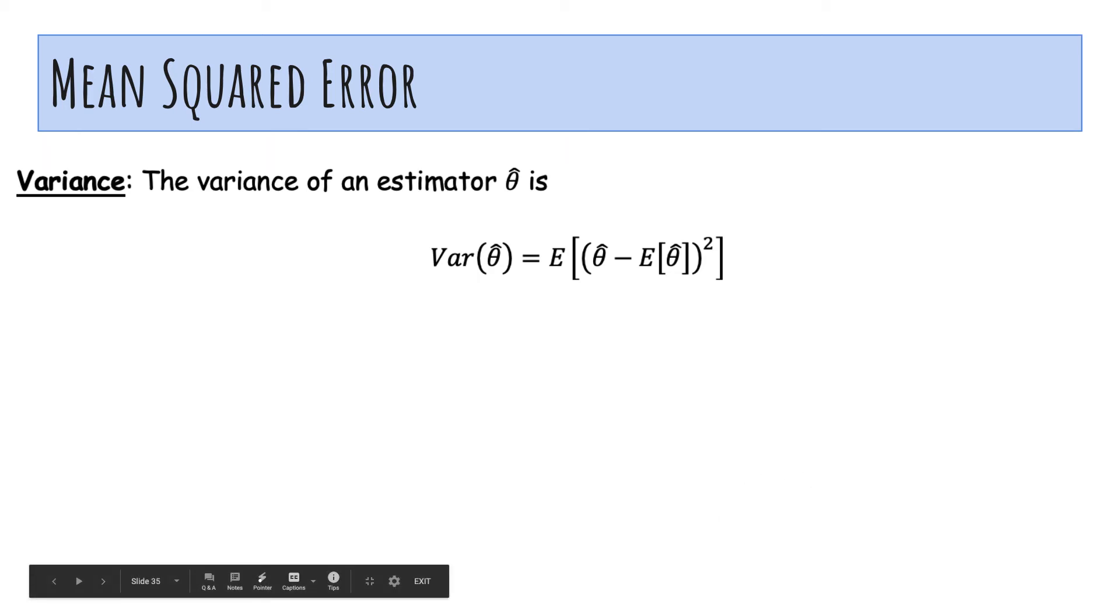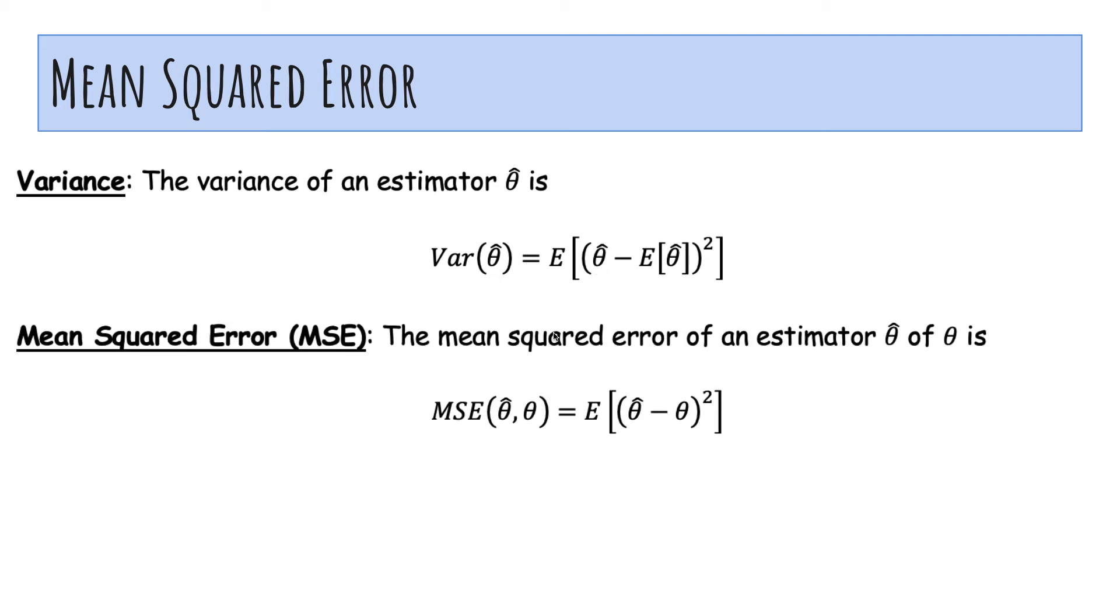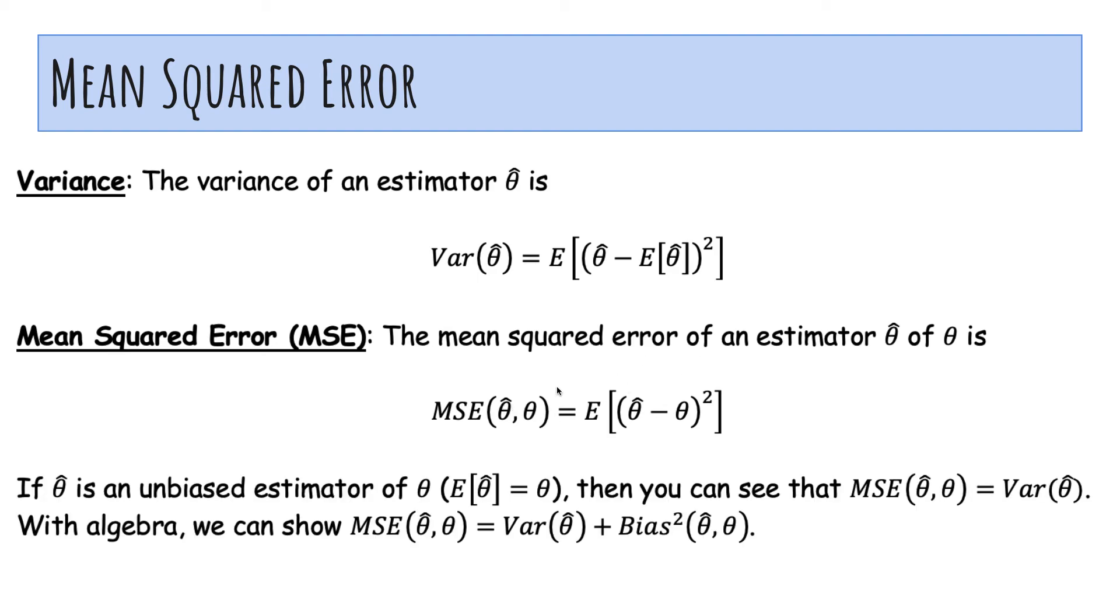So finally, we'll talk about mean squared error. So being on target is great, but you also want to make sure you don't have high variance. You want to be pretty accurate. So this variance and mean squared error will tell us how accurate we are. The variance of an estimator is just the definition of variance - the variable minus the expected value quantity squared. And the mean squared error is defined to be between theta hat and theta, which is the expected squared deviation of theta hat from theta. And so you'll see that if theta is unbiased, that means if expected theta hat equals theta, then the mean squared error is actually equal to the variance. And with some algebra, you can show that the mean squared error is the variance plus the bias squared, actually. And we'll show that on the next slide.